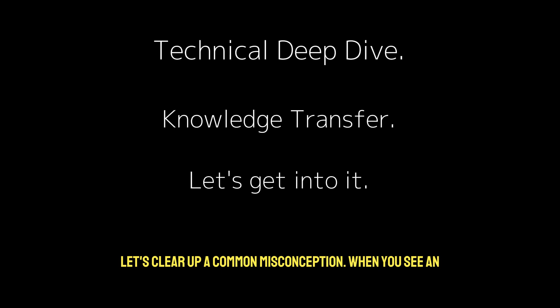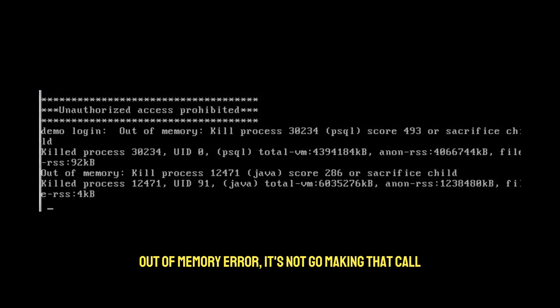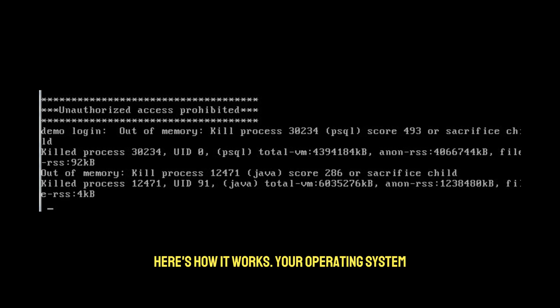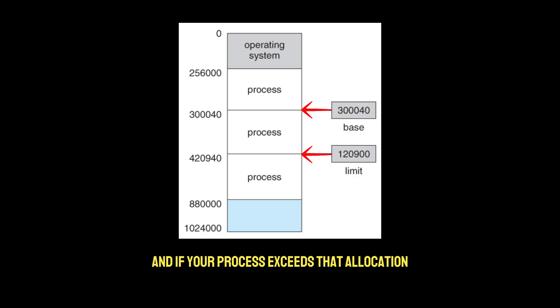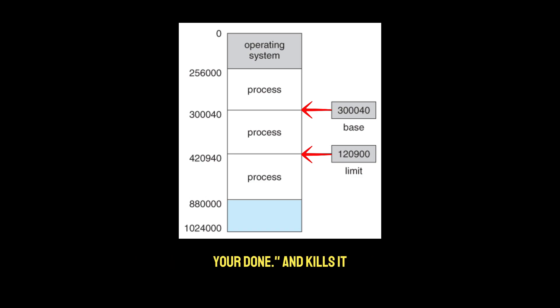First, let's clear up a common misconception. When you see an out-of-memory error, it's not Go making that call — it's the operating system. Your operating system assigns a fixed amount of memory to your process, and if your process exceeds that allocation, the OS says nope, you're done, and kills it.